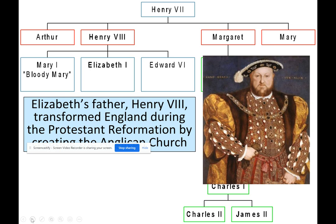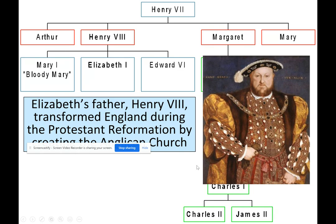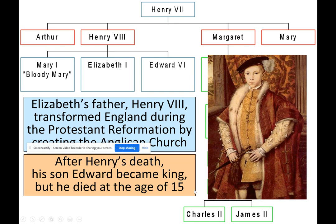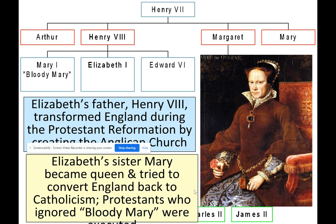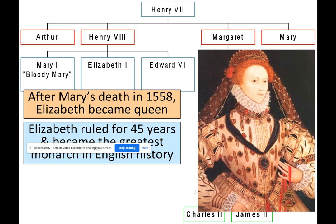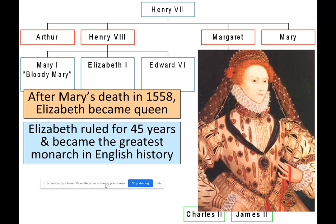Elizabeth's father Henry VIII transformed England during the Protestant Reformation by creating the Anglican Church. After his death, his son Edward became king but died at the age of 15. Elizabeth's sister Mary became queen and tried to convert England back to Catholicism — Protestants who ignored Bloody Mary were executed, hence her name. After Mary's death in 1558, Elizabeth became queen, ruled for 45 years, and became the greatest monarch in English history.